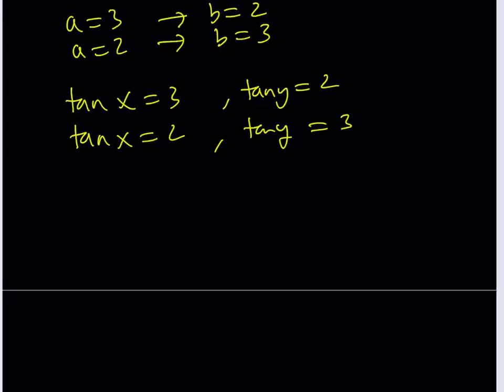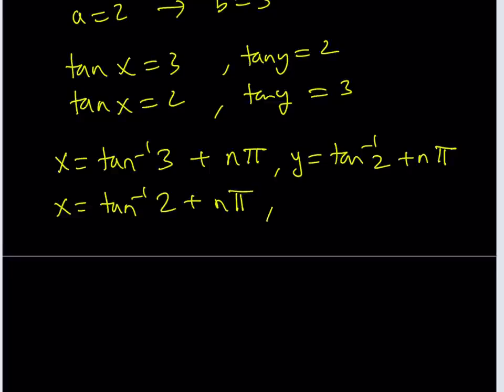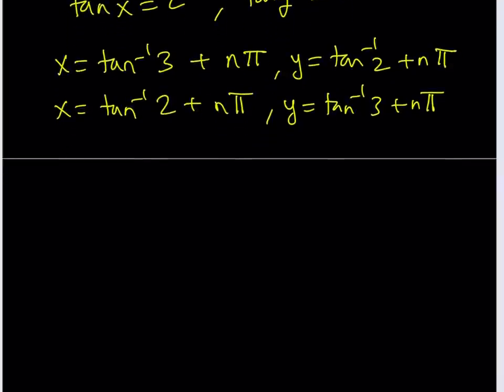From here, if you wanted to find the x and y values, you can just write them as x = tan⁻¹(3), and then by adding π to it, you're going to get the other solution, because those are going to have the same tangent. But the inverse tangent function is only going to give you the principal one. We can write x = tan⁻¹(3) + nπ, and y = tan⁻¹(2) + nπ, and the same thing for the other case, just switching them around. I'm just going to leave it like this because these are the exact forms.